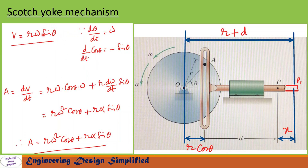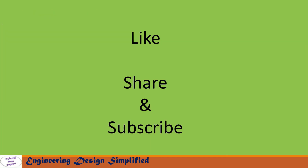Differentiating: r·ω·sinθ gives r·ω·cosθ · ω, and the differentiation of omega gives r · (dω/dt) · sinθ. So this equation becomes r·ω²·cosθ + r·α·sinθ, where dω/dt is alpha, the angular acceleration of the crank. Therefore, the acceleration of point P on this slider is a = r·ω²·cosθ + r·α·sinθ. That's all for today's video — if you like this content please like, share, and subscribe. Thanks for watching.